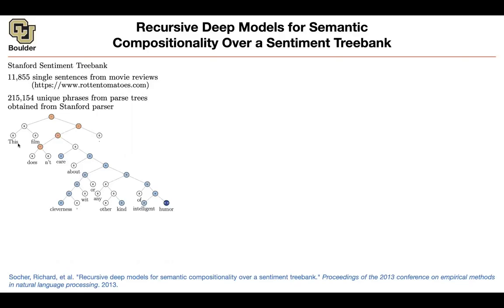Per each node in the tree, you have sentiment labels. For example, 'this' is neutral, 'feel' is neutral, 'doesn't' is neutral. Zero is for neutral, plus is for positive, double plus is for very positive. So 'humor' is very positive. There are a bunch of negatives, and in the end the total sentiment of this phrase is labeled as negative. So that's your data — the input is the tree, and the output is very negative, negative, neutral, positive, or very positive.